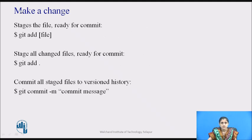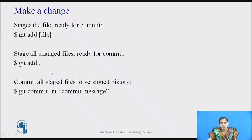To make changes, you can stage files that are ready to be committed using the git add command. To add a particular file, specify the file name. To stage all changed files, you can use git add dot, git add --all, or git add -a. To commit all staged files to version history, use the commit command: git commit -m followed by the commit message.